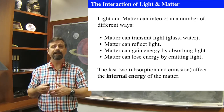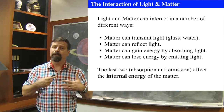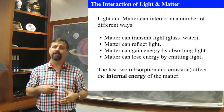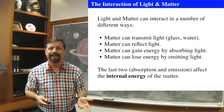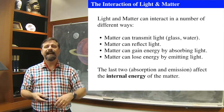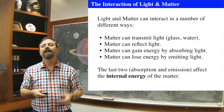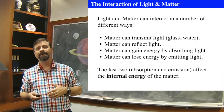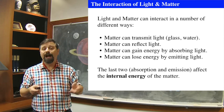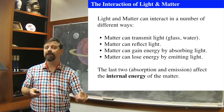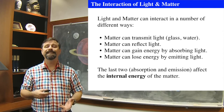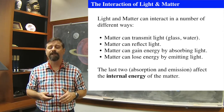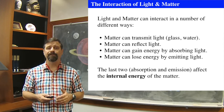Matter can gain energy by absorbing light. If you go out on a hot day, the light from the sun — infrared radiation — goes into your skin and you absorb the energy of that light, as does ultraviolet light. Matter can also lose energy by emitting light. If it's warm or hotter than the surroundings, light will spontaneously come off and radiate to the surrounding environment — that's called radiative transfer of energy.